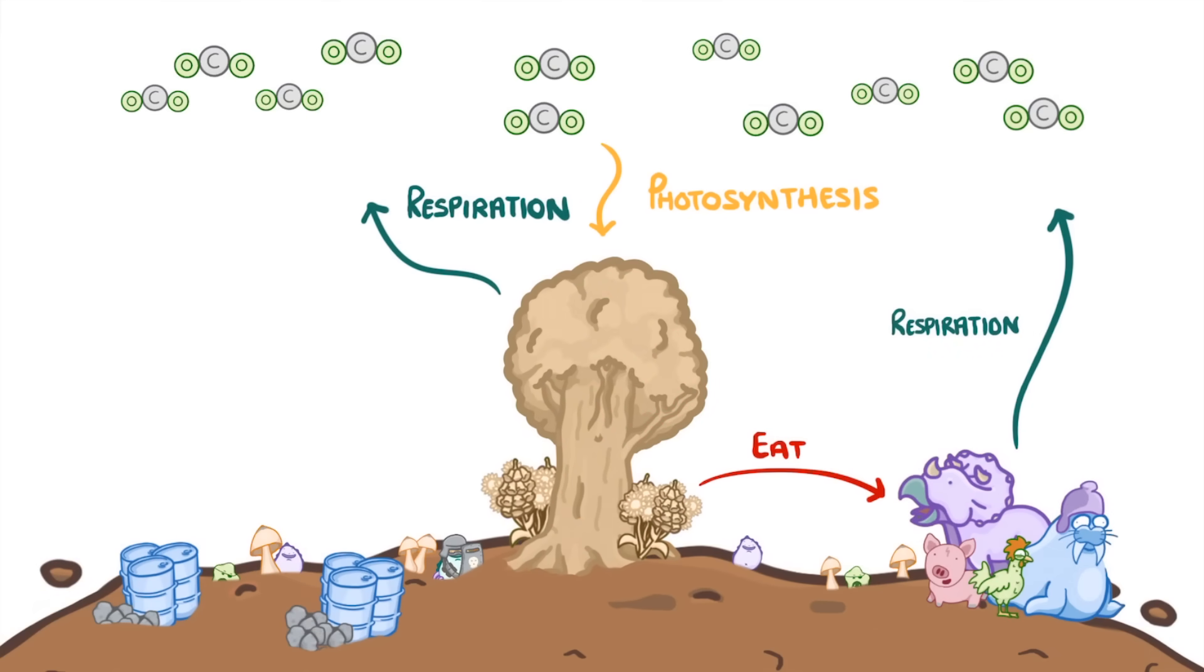When these plants and animals die though, two more things can happen to the carbon. One is that the organisms are decayed by microorganisms that live in the warm, moist, aerobic conditions of the soil. This will break them into smaller and smaller pieces until all of the carbon has been released as carbon dioxide during microbial respiration.